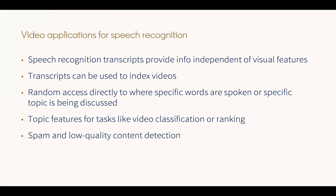Many videos use this audio track for a person's speech — for example, a meeting recording or a video of a course where somebody is teaching. The audio track is usually somebody speaking. So if we do speech recognition on the audio track and produce transcripts, we will have information independent of the visual features. These transcripts can be used to index videos using keywords, and even to randomly jump into a specific part of the video where a specific word is being spoken. We can index timestamps, enabling random access into important parts of the video, and use transcripts for topic modeling, extracting topic features — all useful for downstream tasks like spam detection, low quality content detection, as well as recommendation and search systems.